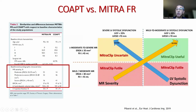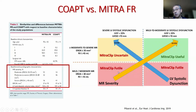TER is most likely to benefit patients who have significant moderate to severe MR (grade 3 or 4) with not too much LV dilation and LV dysfunction — LV end-systolic diameter less than 70 mm, which was a COAPT inclusion criterion, and LVEF more than 20%. Patients with mild to moderate MR are less likely to benefit, and patients with moderate to severe MR but advanced LV dysfunction have uncertain benefit.